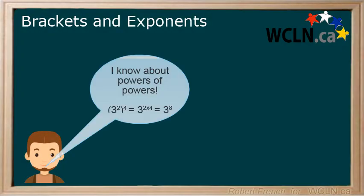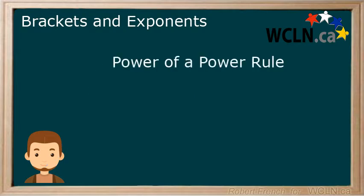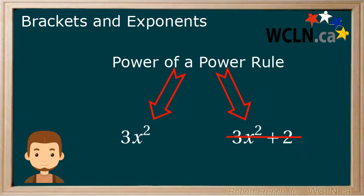You have learned about powers of powers and that you multiply the exponents together. We used brackets around a power or powers with another power on the bracket to show this. This works with a single term but not an expression. Why? Let's find out.